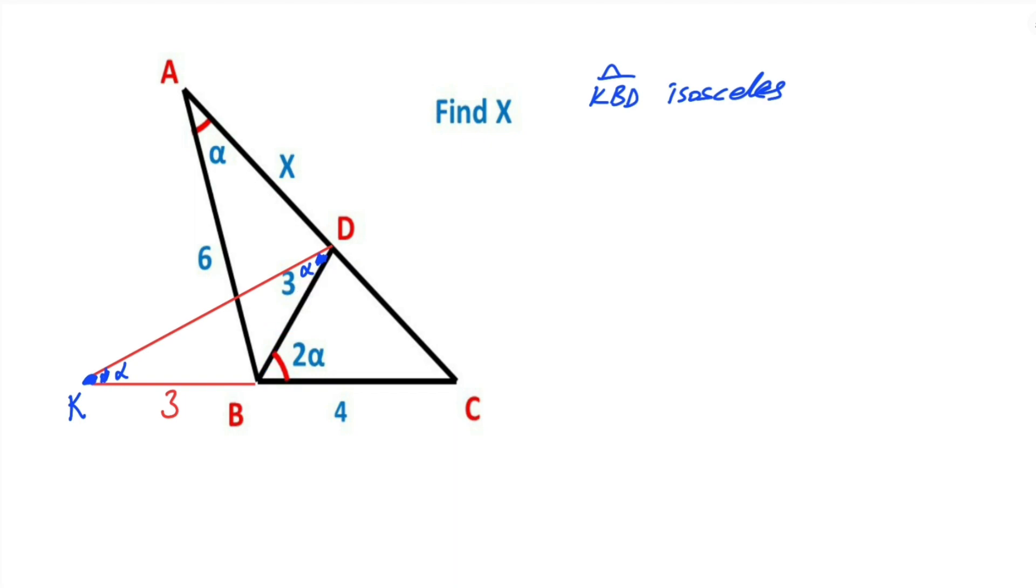That means if we connect K and A point like this, we get a cyclic quadrilateral. Therefore AKBD is a cyclic quadrilateral.